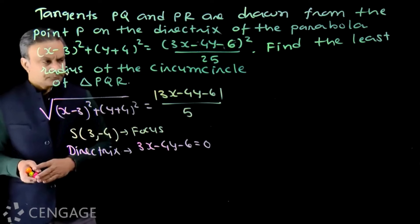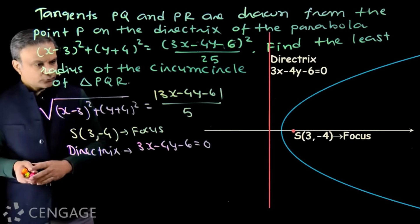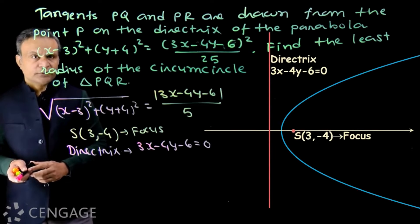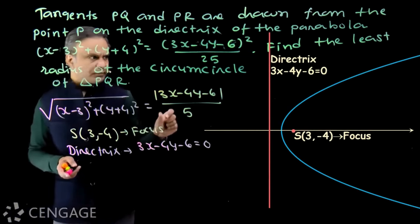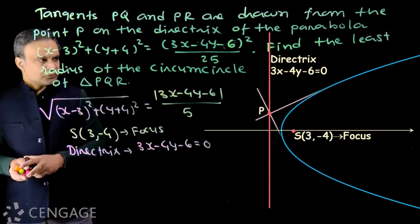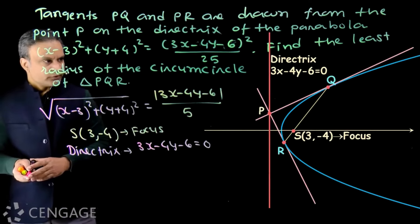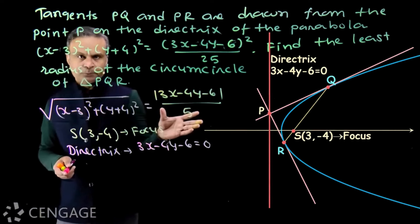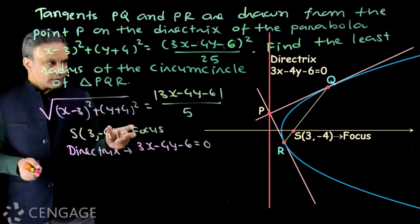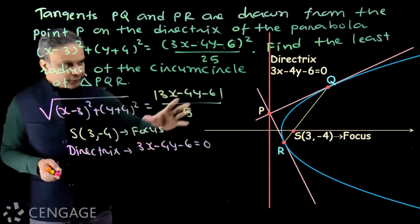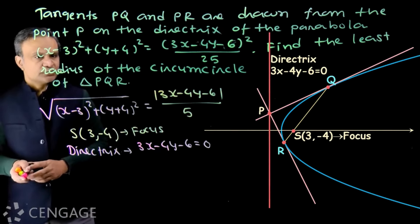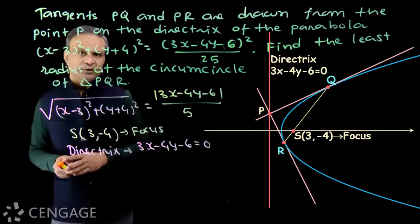Now let us look at the diagram. Here we have the parabola with focus at point (3, -4) and directrix with equation 3x minus 4y minus 6 equals 0. Point P lies on the directrix. From this point, we draw tangents to the parabola — tangents PQ and PR. We have triangle PQR, and we have to find the least radius of the circumcircle of triangle PQR.